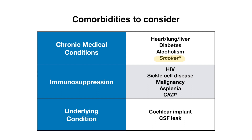Immunosuppression consisted of HIV, sickle cell disease, any malignancy, asplenia, and chronic kidney disease. Other underlying conditions include a cochlear implant or a cerebrospinal fluid leak, because both of these increase risk of meningitis, which Streptococcus pneumoniae can also contribute to.